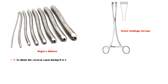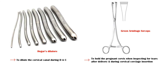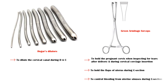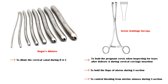Green Armitage forceps have several uses. They are used to hold the pregnant cervix when inspecting for tears after delivery and during cervical cerclage insertion. They are also used to hold the flaps of the uterus and to control bleeding from uterine sinuses during caesarean section.